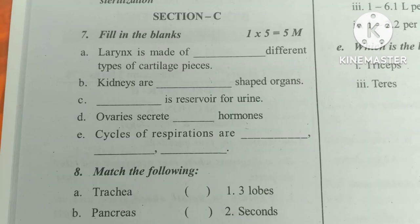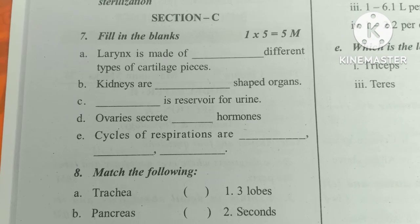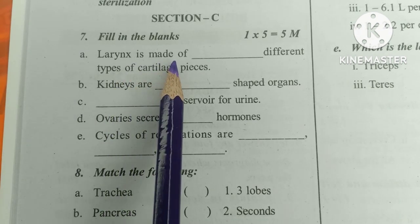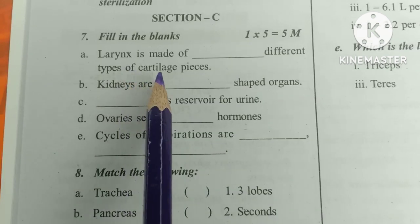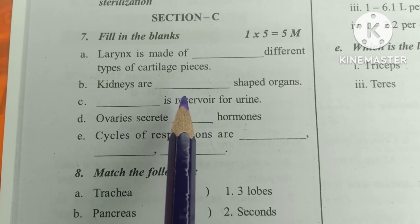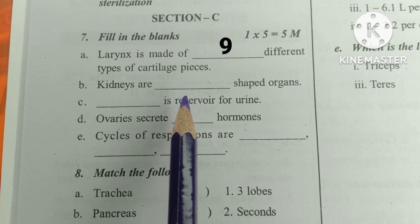The board exam has 15 marks for short answers, including fill in the blanks, match the following, and multiple choice questions. First, fill in the blanks: Larynx is made of how many different types of cartilage pieces? The answer is 9 different types of cartilage pieces — 3 unpaired and 3 paired.